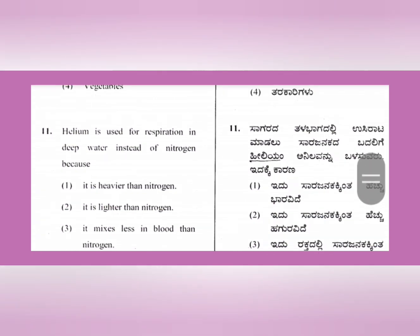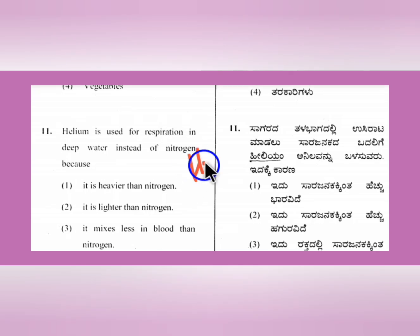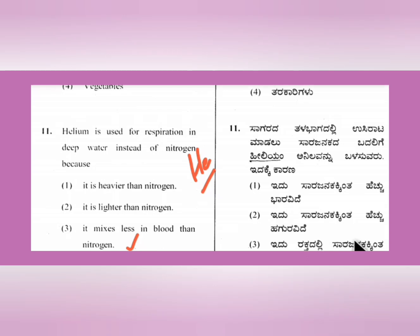Question 11: Helium is used for respiration in deep water instead of nitrogen. Option number 3 is the right answer - helium mixes less in the blood than nitrogen. That is why helium is used in deep water breathing mixtures instead of nitrogen.